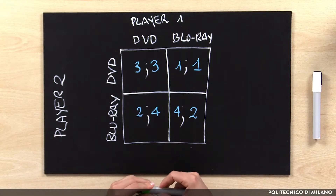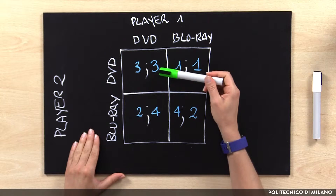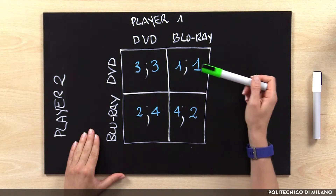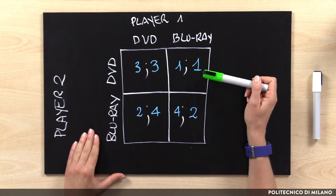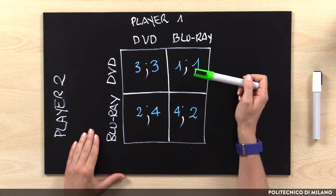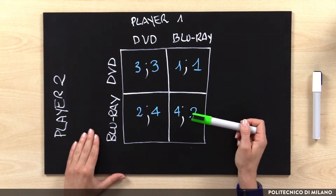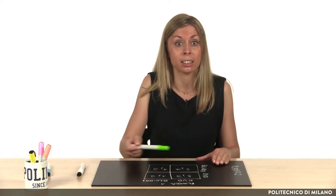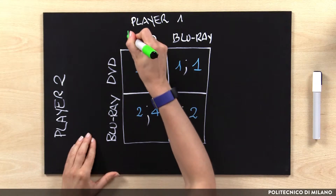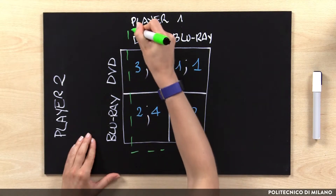Considering our example, we could notice that for Player 1, DVD is gaining a payoff of 3 rather than a payoff of 1 if Player 2 selects DVD. Moreover, DVD is giving a payoff of 4 rather than 2 if Player 2 selects Blu-ray. Thereby, DVD is a dominant option for Player 1.